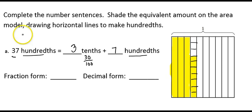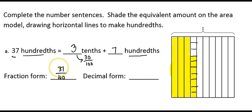Now we'll write the shaded portion in fraction form. All together I have 37 hundredths — the 3 tenths is the same thing as 30 hundredths, and then I have 7 more hundredths. Written as a decimal, this would be 0.37. The 7 is in the hundredths spot, and we read it as 37 hundredths.